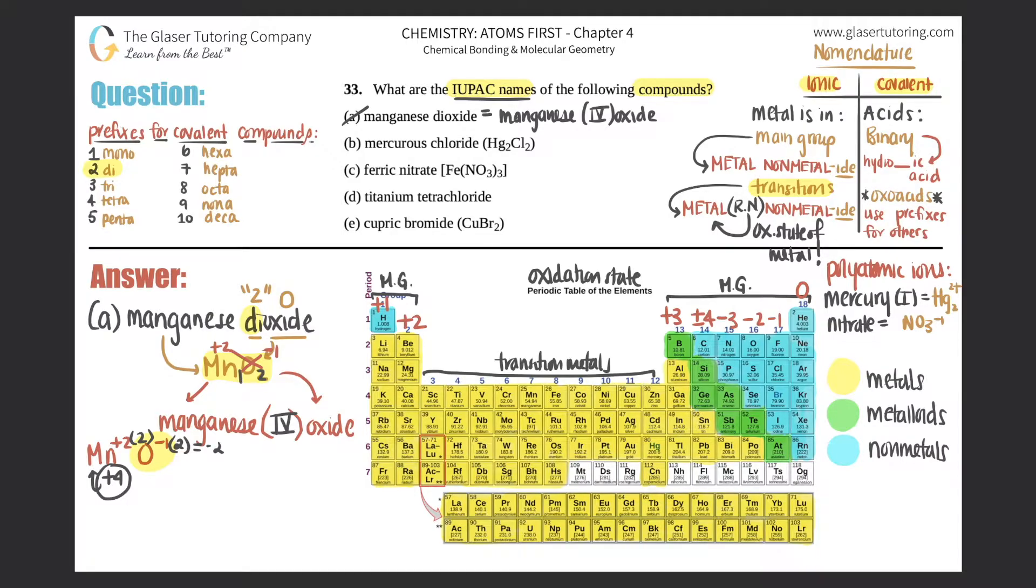Now B, we have mercurous chloride. And actually they tell me what the compound is. So I'm just going to erase this because we could just work off the compound. So this is Hg2Cl2. So this one looks not challenging, but there's a little trick to it. Now I see that I have mercury and mercury is over here. It's part of the transition metal. So I know that I have to have a Roman numeral because I don't know what the charge of the transition metal is.